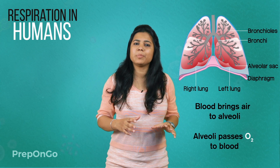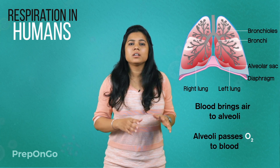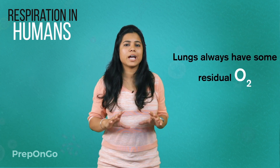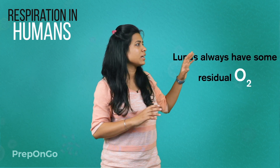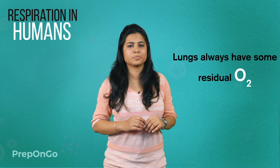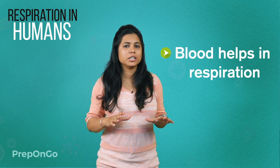The lungs have some amount of residual volume so that the exchange of oxygen and carbon dioxide has sufficient time to occur. If a human being were to depend on the diffusion process alone for respiration, it would take a very long time — so we need a medium, and that medium is blood.